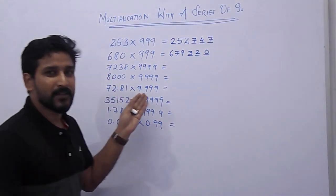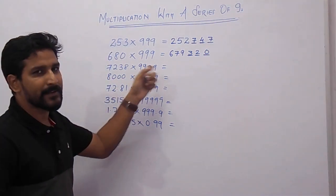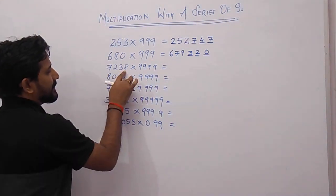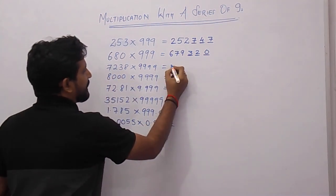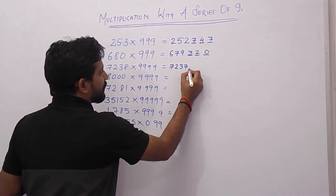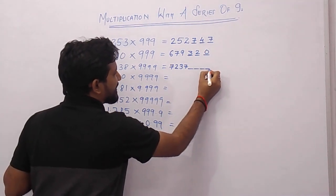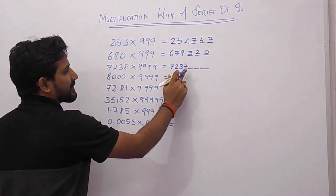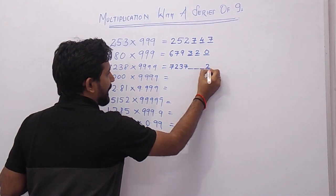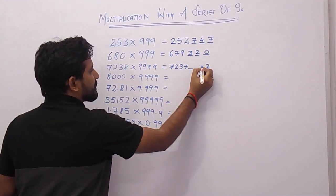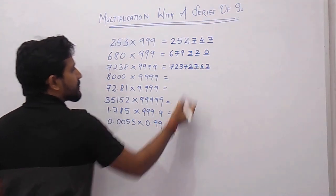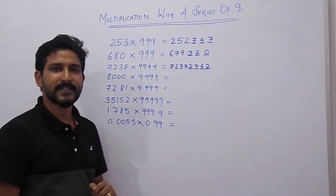Now we will see a 4-digit number multiplied by 9999 (four nines). Follow the same steps: take 7238, decrease it by 1 to get 7237. Since it is a 4-digit number, put 4 spaces and take the 9's complement of each digit from the right: 9 minus 7 is 2, 9 minus 3 is 6, 9 minus 2 is 7, 9 minus 7 is 2. So the answer is 72,372,762.